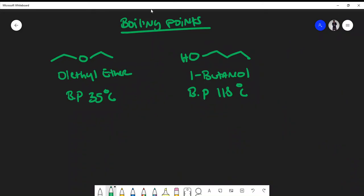In this video we're going to talk about boiling points using an example. The boiling point of diethyl ether is about 35 degrees Celsius, while that of 1-butanol is 118 degrees Celsius.